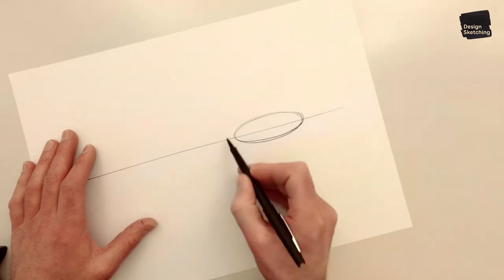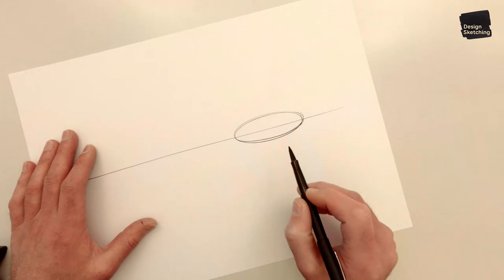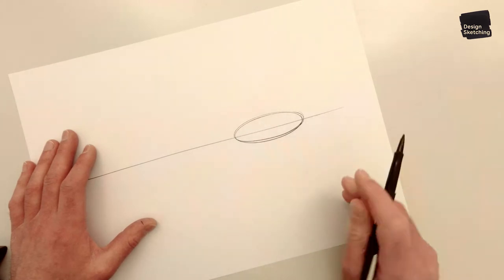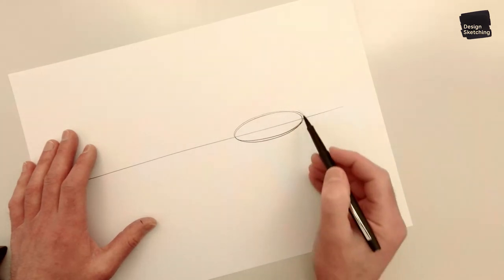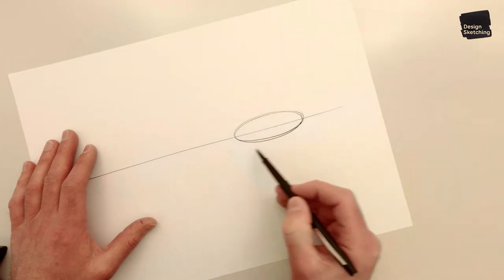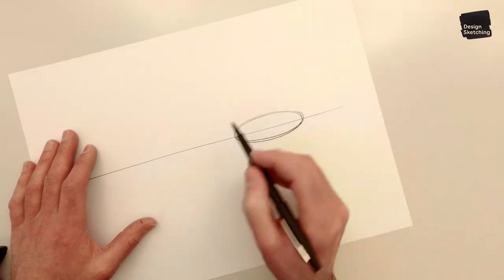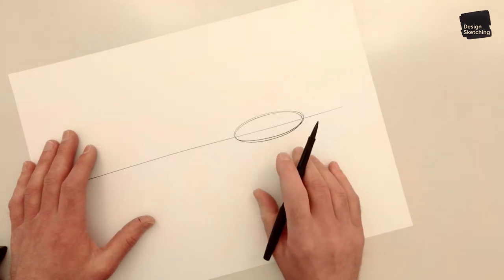So what I'm doing is ghostlining. I draw the ellipse in the air first before I drop my pen on the page. And that really helps to get that motion fluent and feel the ellipse before you put it on paper.